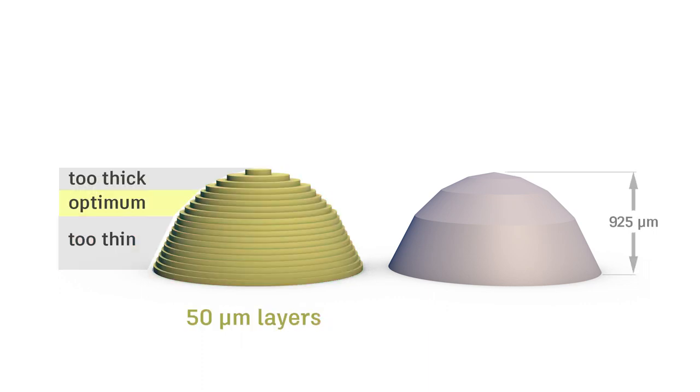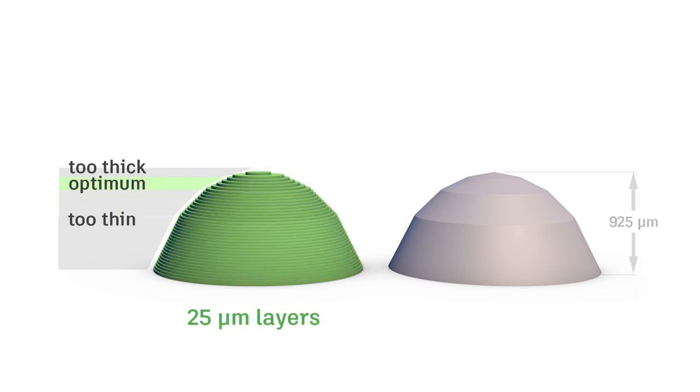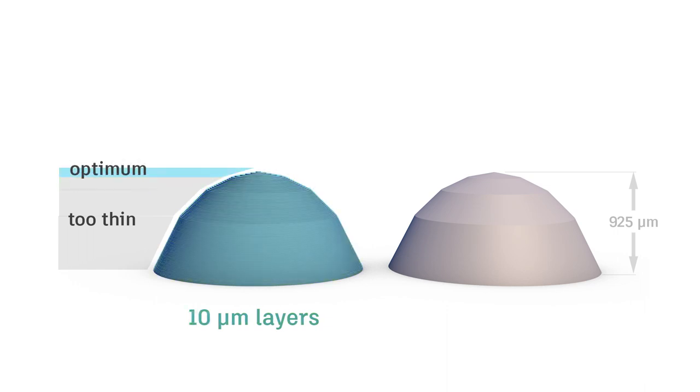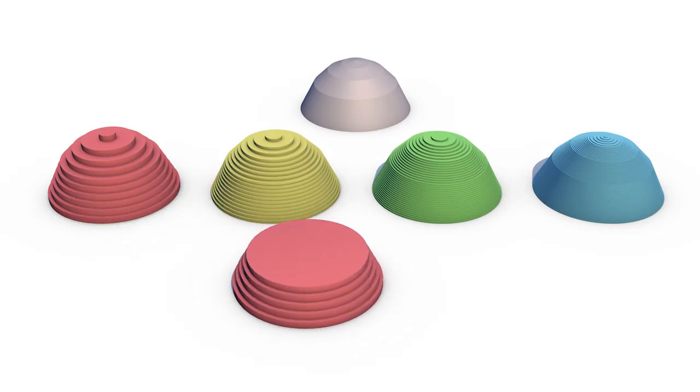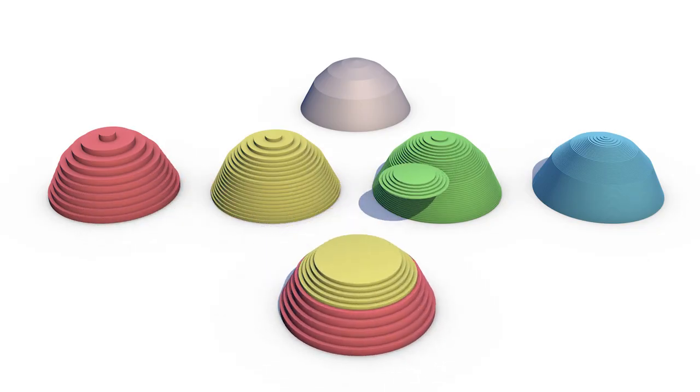At 50 micron slices, the middle section is sliced optimally, but the bottom has more slices than necessary, and the upper regions don't have enough. The dome sliced at 25 microns has the same problem. And 10 micron slices are great at the top, but are overkill for the lower sections. So to optimize, we take a range from each and combine them into a print with four different layer thicknesses in it.